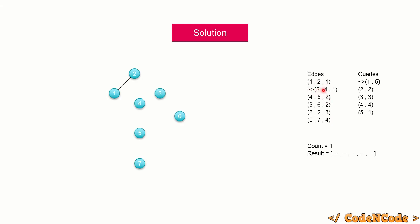We move to the next edge. Weight is still ≤ qi, so we add edge 2-4. The component containing 1-2 has size 2, component with 4 has size 1. So 2×1 = 2, add 2 to count. This gives us two new paths — from 1 to 4 and from 2 to 4. Count becomes 3.